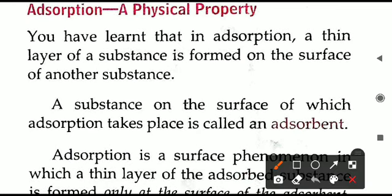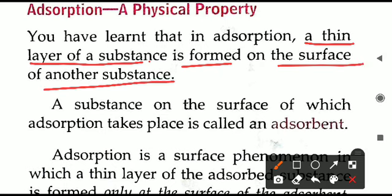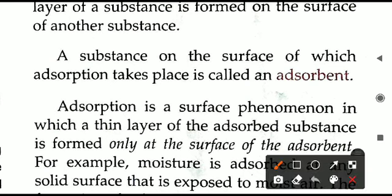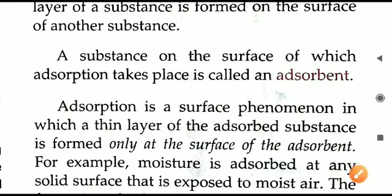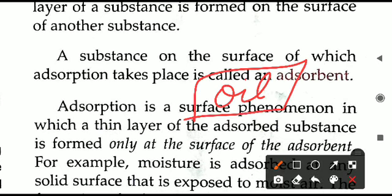Adsorption is a physical process in which a thin layer of a substance is formed on the surface of another substance — a separate layer deposits of a given substance on another. The substance forming this layer is called the adsorbate, and the substance on whose surface adsorption takes place is called the adsorbent. For example, oil forms a layer on water — oil collects on top, depositing on the surface of water. This is adsorption. Don't confuse it with absorption.